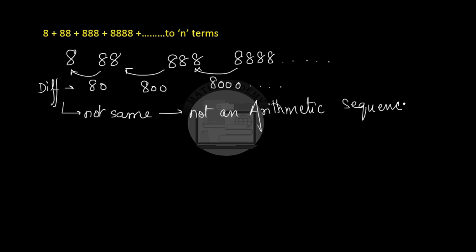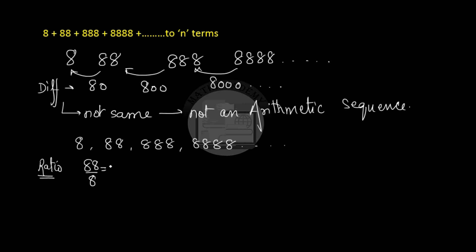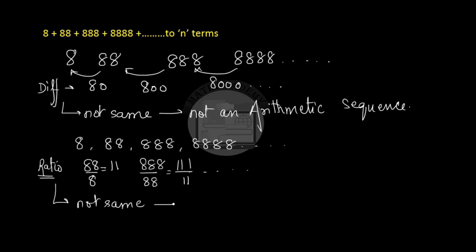Now let us see if the given sequence is a geometric sequence. For a sequence to be geometric, the ratio of consecutive terms should be the same. So 88 over 8 is 11, and 888 over 88 is 111 over 11, and so on. We see that the ratio is not the same, and therefore it is not a geometric sequence either.